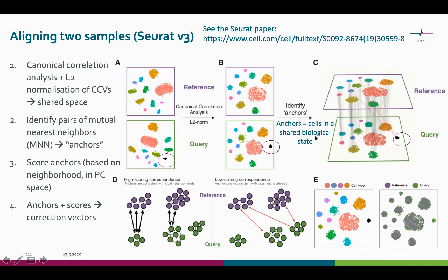Now in this shared space, anchors are identified. These anchors, represented here as grey lines, are cell pairs that share mutual nearest neighbors across the datasets. These anchors will guide the integration. In some cases, there are unique cell populations that are only present in one of the samples, and these could cause problems in the integration process. This is why each anchor pair is scored based on the consistency of its neighborhood.